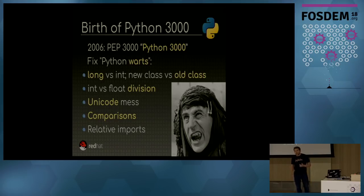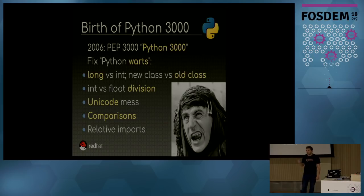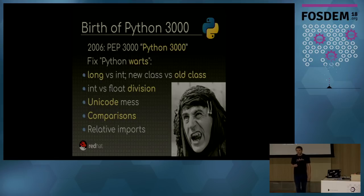For example, in Python 2, you have the small integer and the large integer. If you start with a small integer, depending on the operation, you may get a small or large integer, so to check the type of a variable, you have to check for both types at once. There is also a new class introduced during the development cycle of Python 2. You get a new class when you inherit from the object type, and if you don't inherit from an object, you get an old class, and some features like properties don't work as expected on an old class. Having small integer, new class and old class can be very confusing for newcomers.